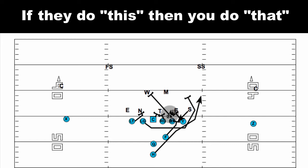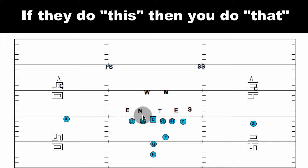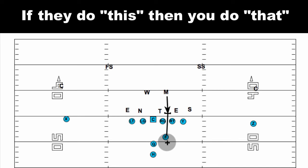What happens if you're running an ISO — which we also call Read — and the fullback has the inside linebacker, but that Mike linebacker blitzes? We're trying to run into this gap and he's walked up and right there. Unless you have a completely ridiculously amazing fullback who can still open up a hole, or he's really not very good, this is a tough play to run.